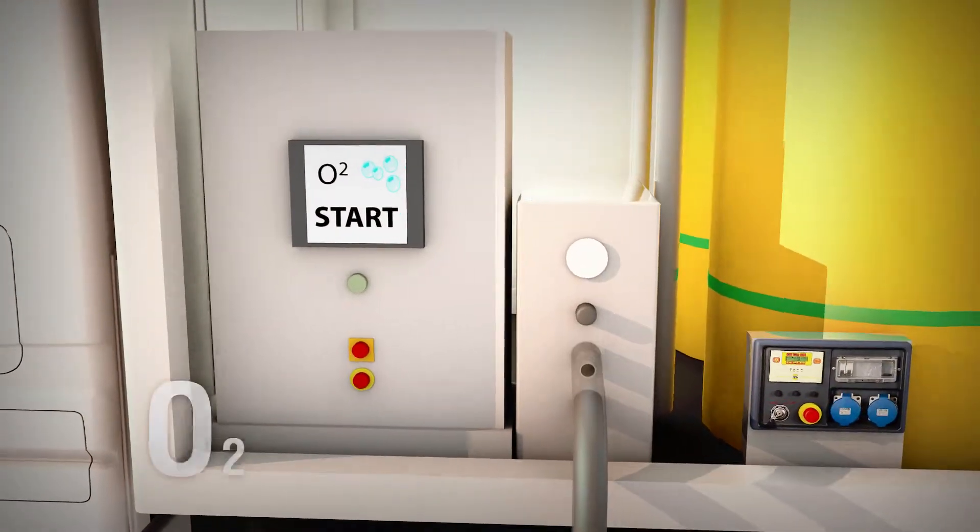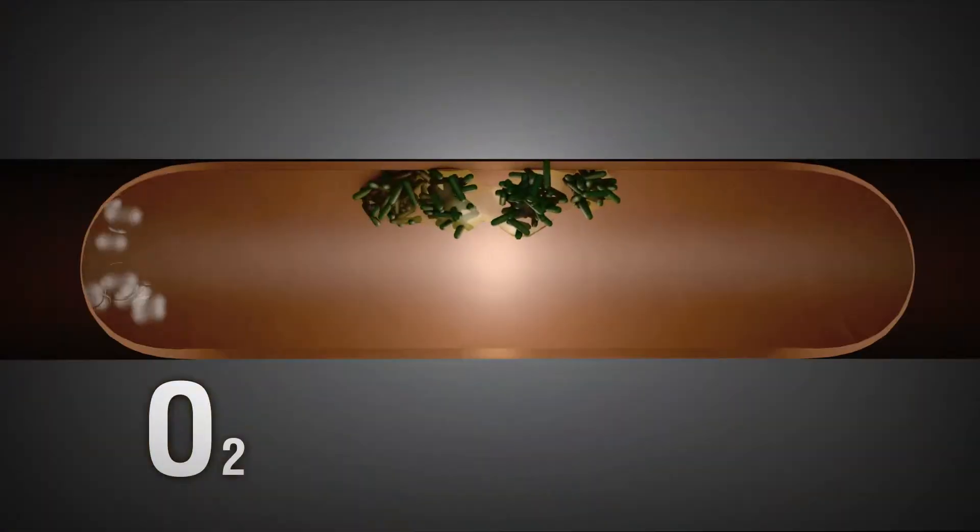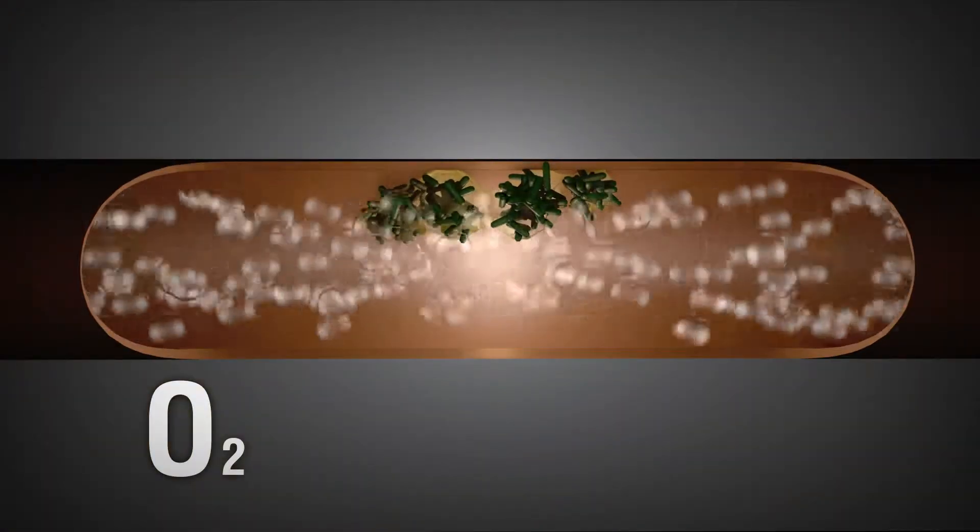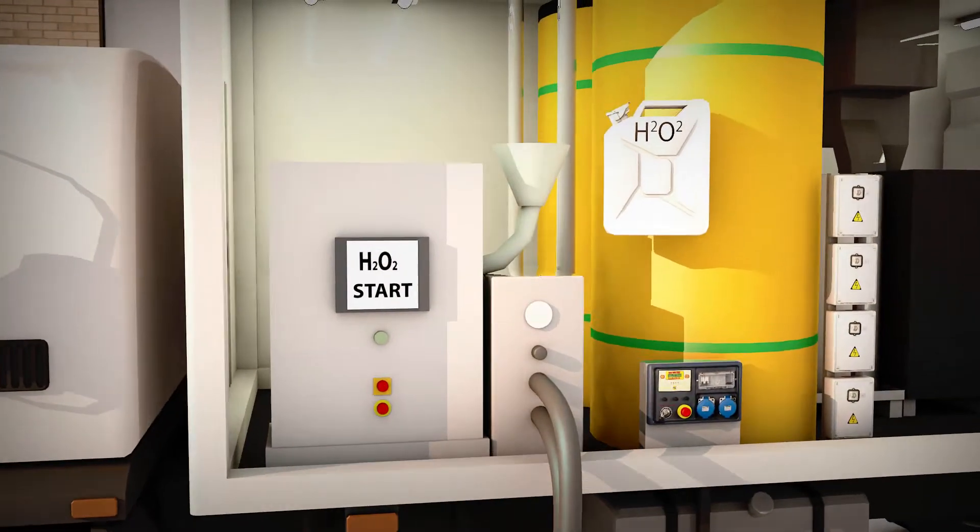Phase 2 involves blowing air pulses through the pipes at 5 second intervals. Together with the hot water, these pulses cause the Legionella and the biofilm to loosen from the inside of the pipes.